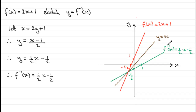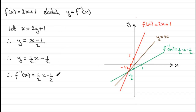This happens all the time. If we take any graph of f of x and are asked to sketch the inverse function, all we have to do is simply reflect it in the line y equals x — we don't have to resort to working it out.